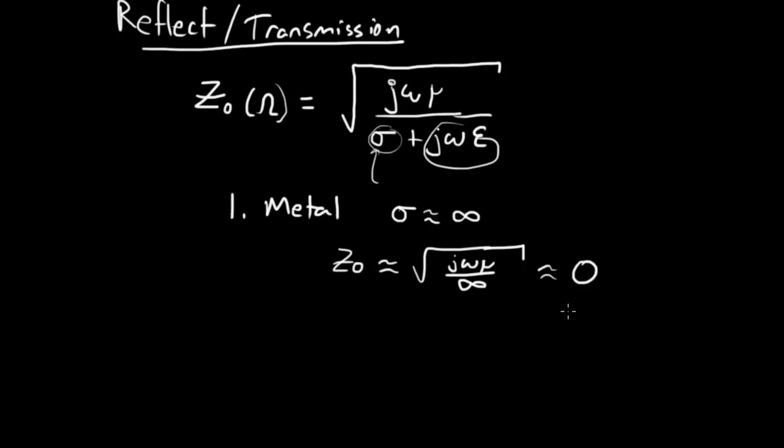Well, that's going to be approximately zero. So this is approximately zero. Great. The characteristic impedance of a metal is approximately zero. Characteristic impedance.